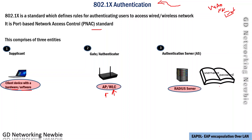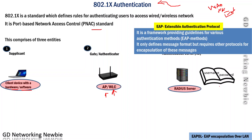These are the main elements of 802.1x. For authentication we need authentication messages, and for that we have EAP — the Extensible Authentication Protocol. EAP is actually a framework, not a specific protocol. It is a framework which provides guidelines for authentication methods, so we can have various authentication methods known as EAP methods.